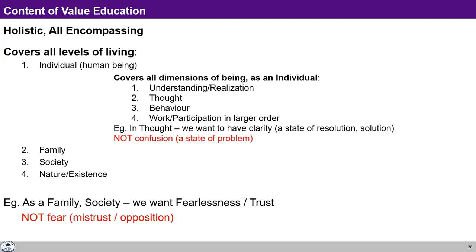With this need that we have realized, this definition of values, and with these guidelines, now we can look into the content and process of value education. The content of value education has to be holistic and all-encompassing. It has to cover all levels of our being: as an individual, as a member of the family, as a member of the society, as a unit in nature and existence.